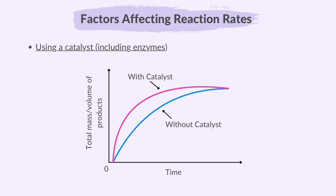In the graph, if you compare a reaction with a catalyst to the same reaction without one, you will notice that the line representing the reaction with the catalyst starts off steeper and levels out earlier.